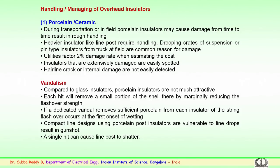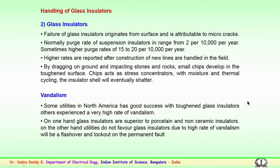Each hit could reduce a shell, thereby marginally reducing flashover performance. If a dedicated vandal removes sufficient porcelain from each insulator of the string, flashover definitely occurs at the first onset of wetting. Compact line designs using porcelain or post insulators are vulnerable to line drops resulting from gunshots. Any single hit could cause a line post to shatter, so vandalism care must be taken for glass or porcelain insulators.